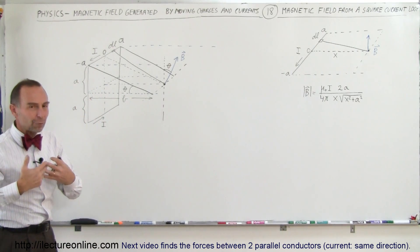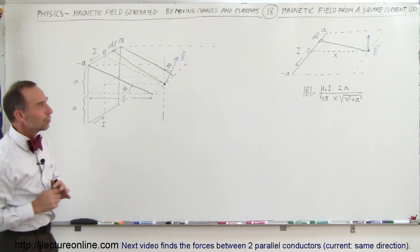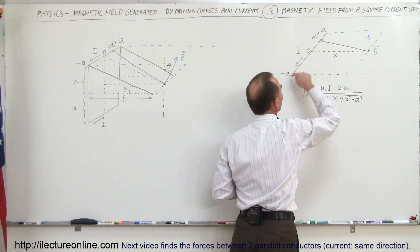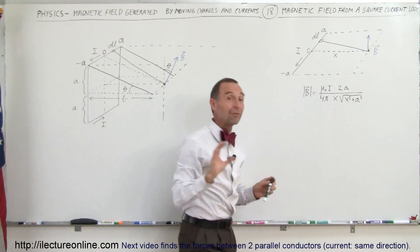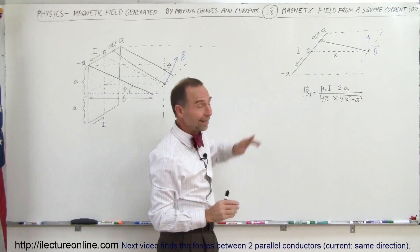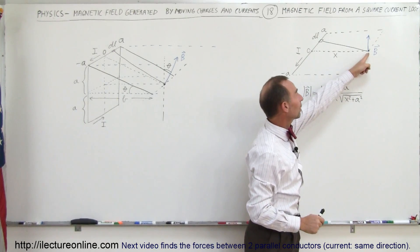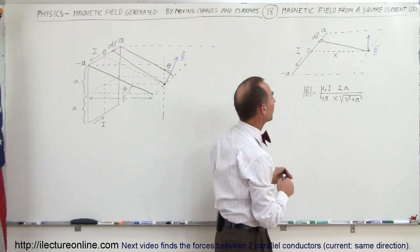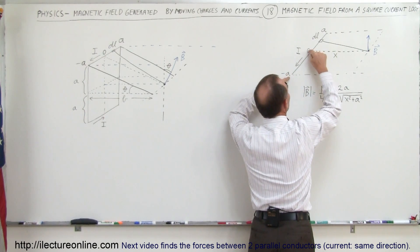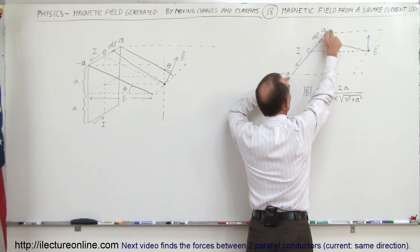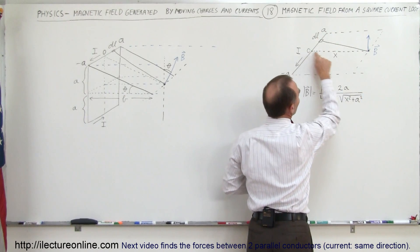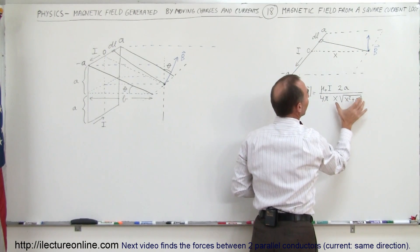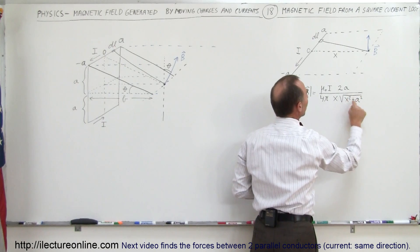To understand how to do that, we first look at a simpler example: a single segment of current, and we find the B field at a nearby point. The result is that the B field equals μ₀ divided by 4π, times the current, times the total length of the segment (2A), divided by x — the distance from the middle of the segment to the point of interest — divided by the square root of x² plus A².